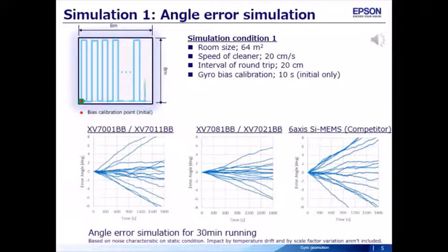XV-7081 and XV-7021 have the best performance among these products, but the angular error gets worse over time.